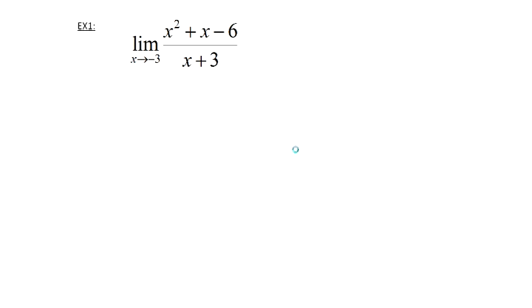As my first example, this limit, hopefully you can already see when I go to plug in I'm going to end up with a problem, but we're going to say, okay, I got a limit, I don't care what the function looks like, I'm going to try plugging in. So when I do this, I'm going to plug in that minus three, I get minus three squared plus minus three minus six, and then I end up dividing by minus three plus three.